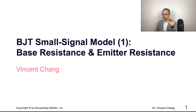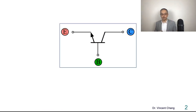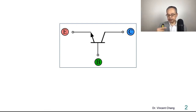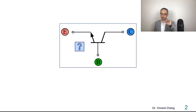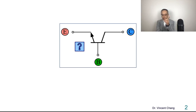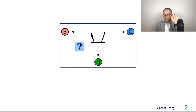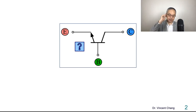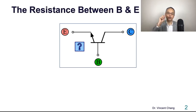Let's focus on these two resistances. Before we explain them, let me ask you a question: what's the resistance between the emitter and the base? This is the BJT — emitter, base, collector. What's the resistance between the emitter and the base?